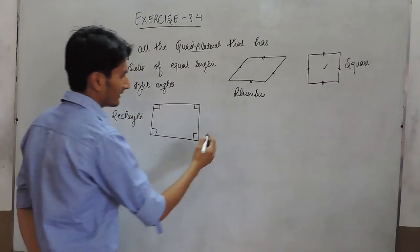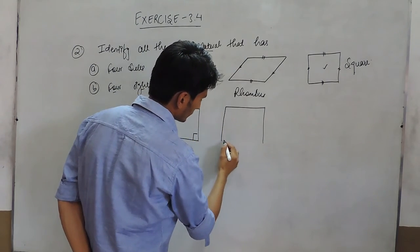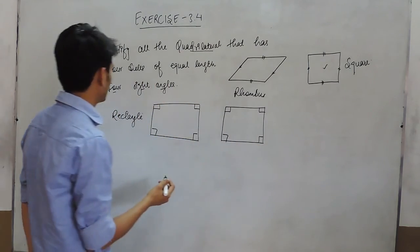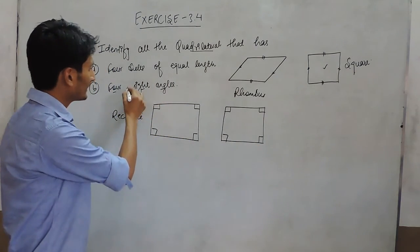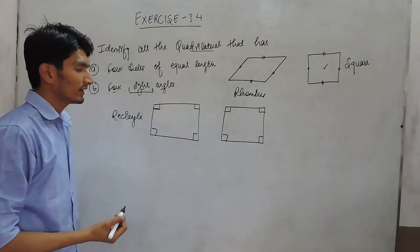And the second figure is square. Square also has all angles equal to 90 degrees. Right angle basically means an angle equal to 90 degrees.